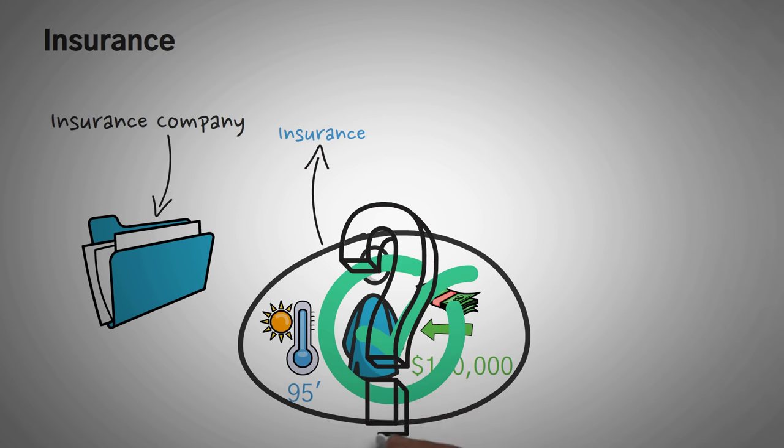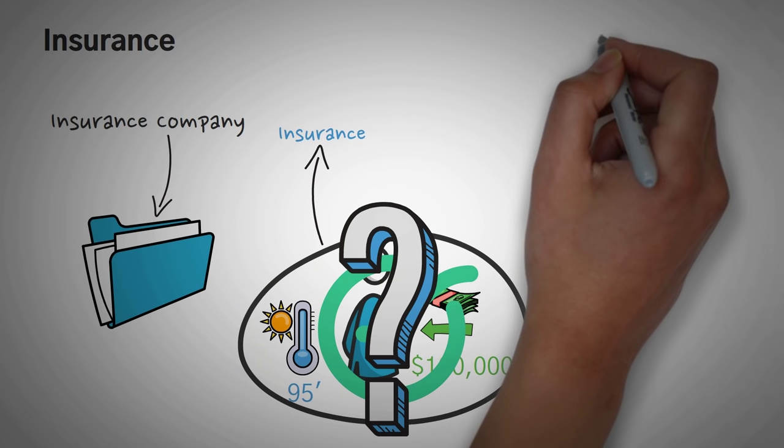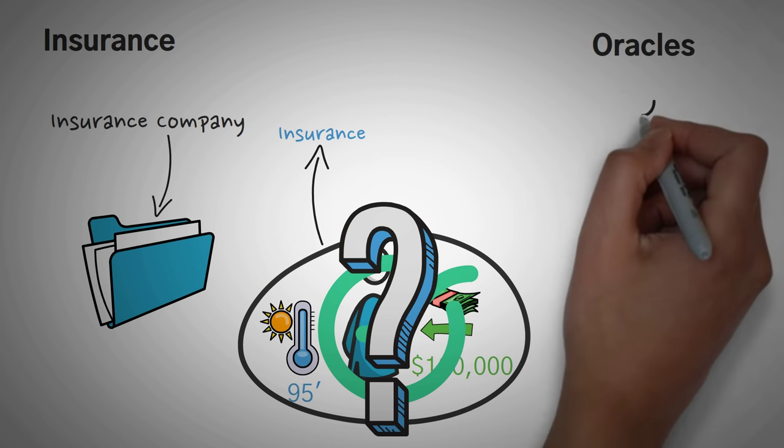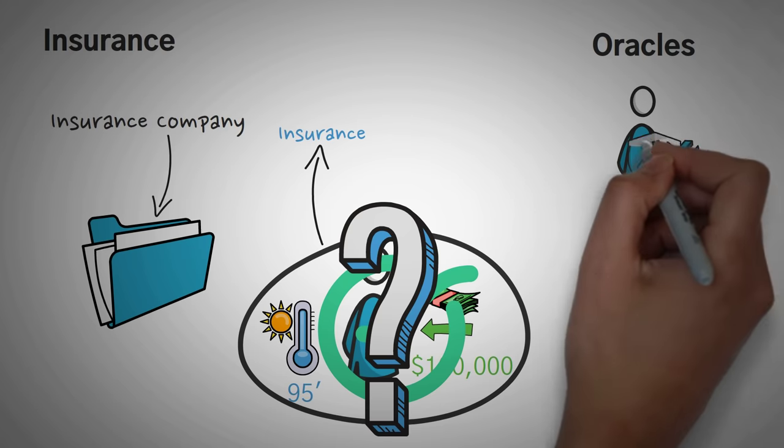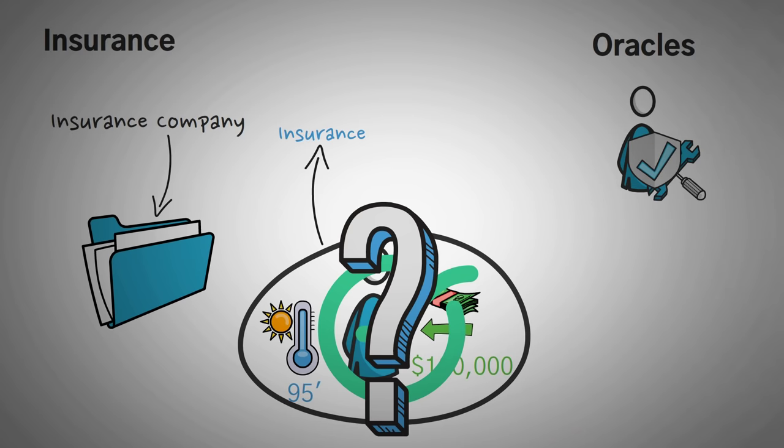Now you might be asking, how the heck does a smart contract, a piece of code, know what the temperature in Missouri is? Well, with the help of something called Oracles. So Oracles are helpful tools to any smart contract. Essentially, they are a trusted source that gives real-world information to anything on the blockchain that requests it. Now Oracles can get confusing, so we'll leave those for another video. You just need to know they send real-world data to a smart contract.